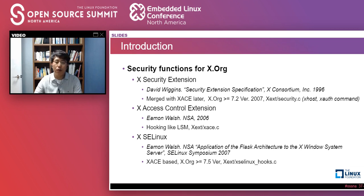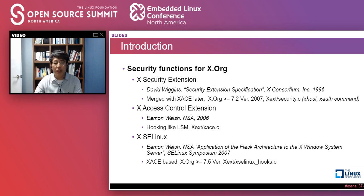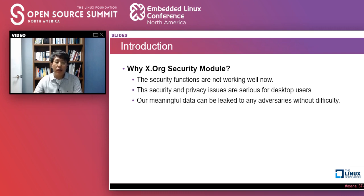I'm sure X access control extension is great work. It hooks X.org functions like the Linux security module. XSELinux is based on the X access control extension, and I also referred to it for XSM. Last, XSELinux — it is designed to control X.org by SELinux policy. Unfortunately, it is disabled by default now. I tried to use it many times, but enabling SELinux settings and debugging the SELinux policy is a terrible job. As a result, I regarded the security functions in X.org as not working well and unsuitable to solve the issues right away.